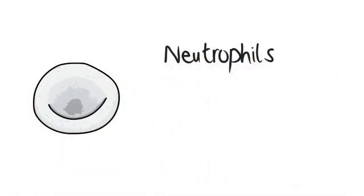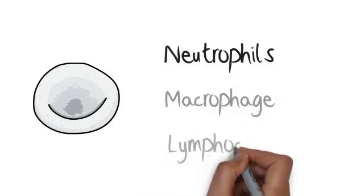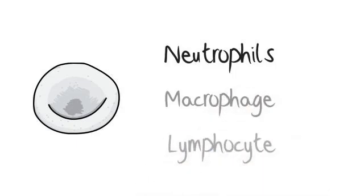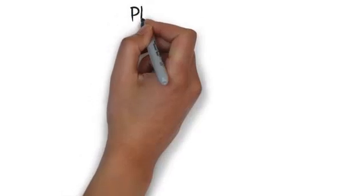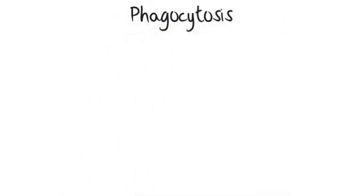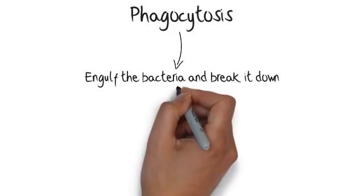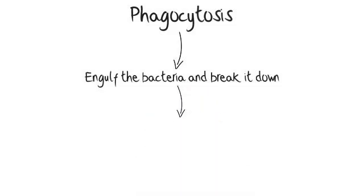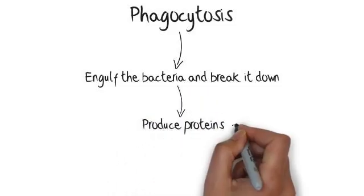The white blood cells have a variety of purposes. There are three major types: neutrophils, macrophage, and lymphocyte. The first purpose that they serve is to conduct phagocytosis. This is where a group of cells will engulf the bacteria and break it down. They will then produce proteins that will break the bacteria down or that will stick to it.